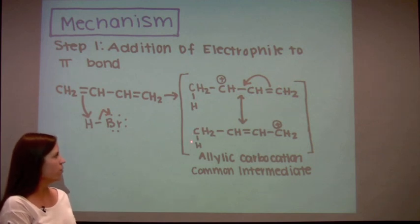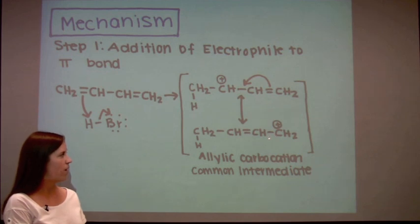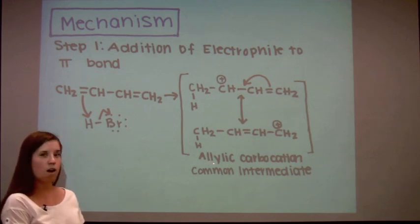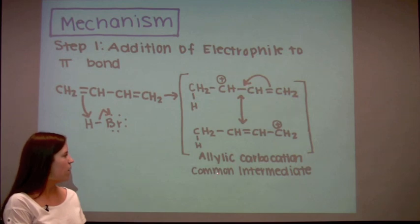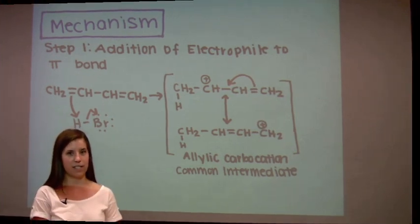Here is a resonance structure where the proton is on the first carbon, the positive charge is on the fourth carbon, and the pi bond is in between the second and third carbons. The allylic carbocation is a common intermediate for diverging pathways in the second step.